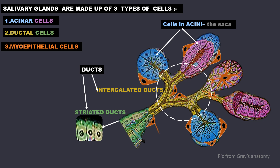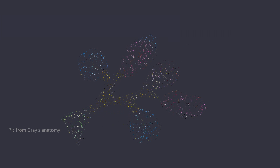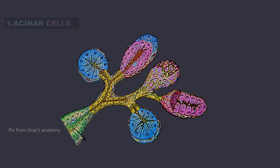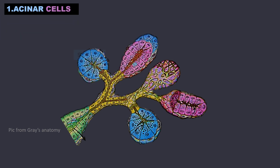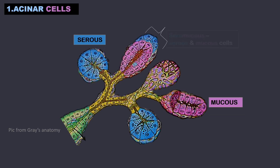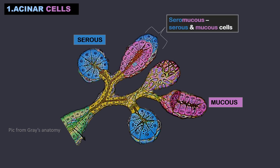These are the myoepithelial cells. Starting with the acinar cells, these are either serous or mucus, or seromucus — that is, made of both serous and mucus type of cells. Serous cells are pyramidal in shape and mucus cells are cylindrical in shape.